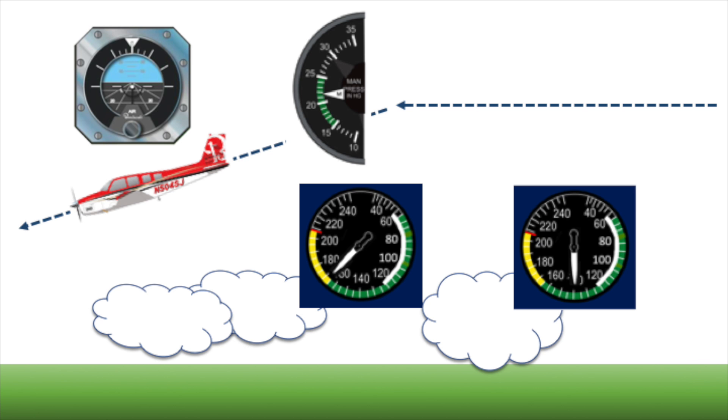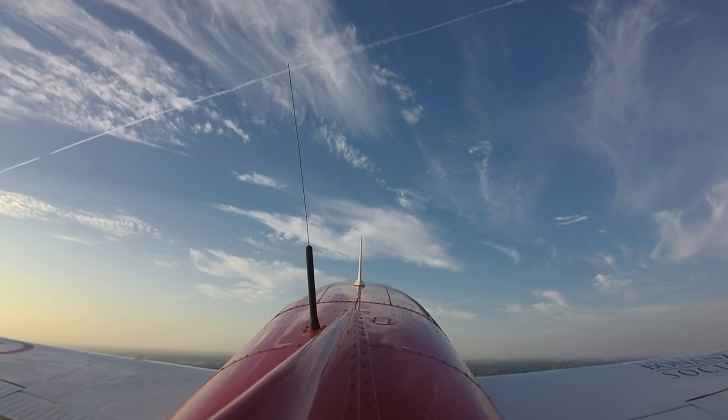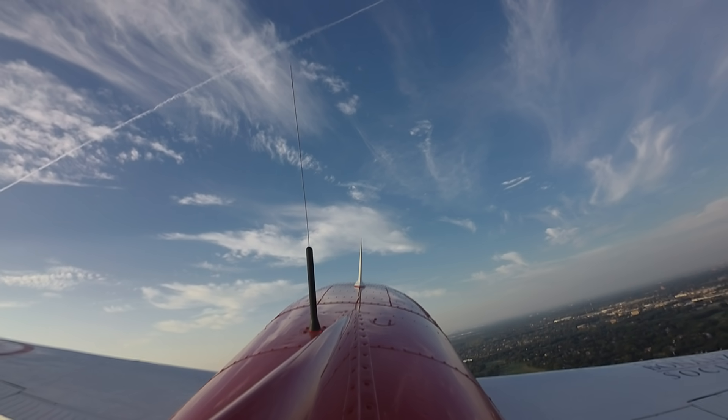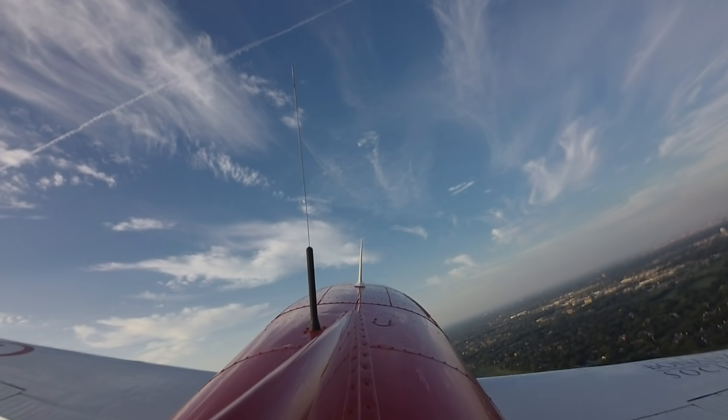A common technique, especially among lower time pilots, is to simply push the nose over when it's time to descend, and then trim the nose down. This does give you free airspeed on the way down. However, it also pushes the indicated airspeed higher, usually into the yellow arc, and well beyond maneuvering speed. This can be an issue if you encounter turbulence as you descend. It may also increase your workload to manage airspeed later on.